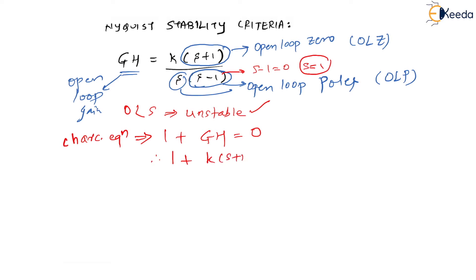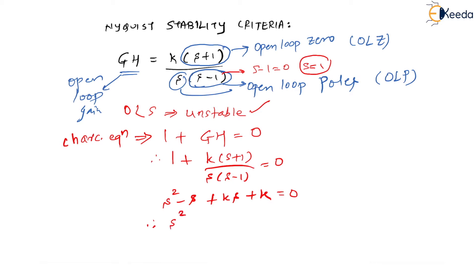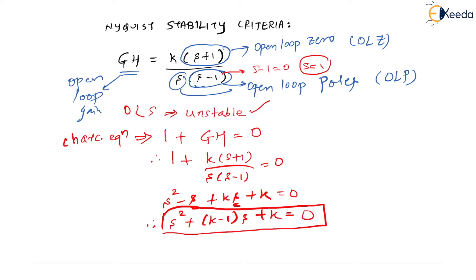Putting 1 plus K(s+1) divided by s(s-1) equal to 0 gives s² + (K-1)s + K = 0. This is the characteristic equation. I will experiment by placing K equal to 0, then K equal to 2, then K equal to 5.